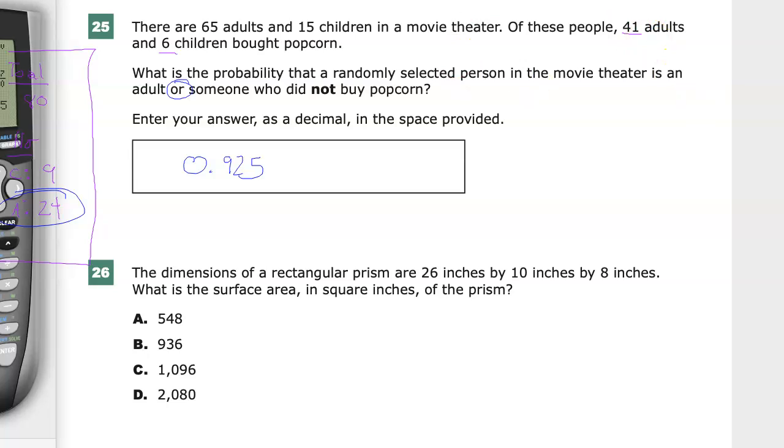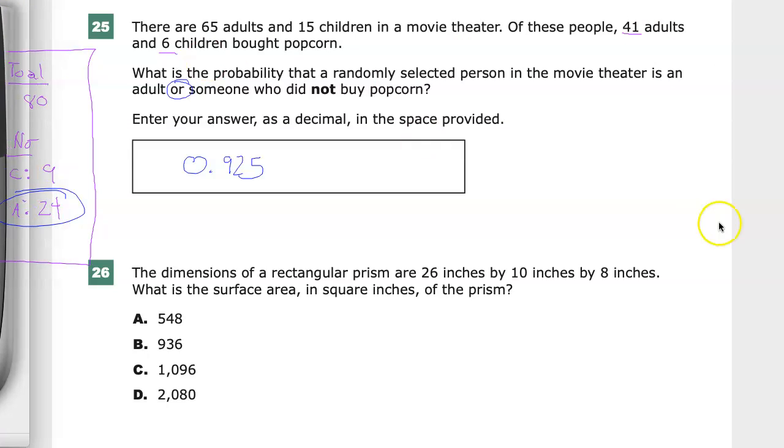We're going to calculate probability. Another thing that we might consider is just looking at where there's overlap. So remember when we had the green and orange little sections here. Well what we could do is find the probability of being an adult and then the probability of being a not popcorn person. And then we want to find out what the probability of the overlap is.